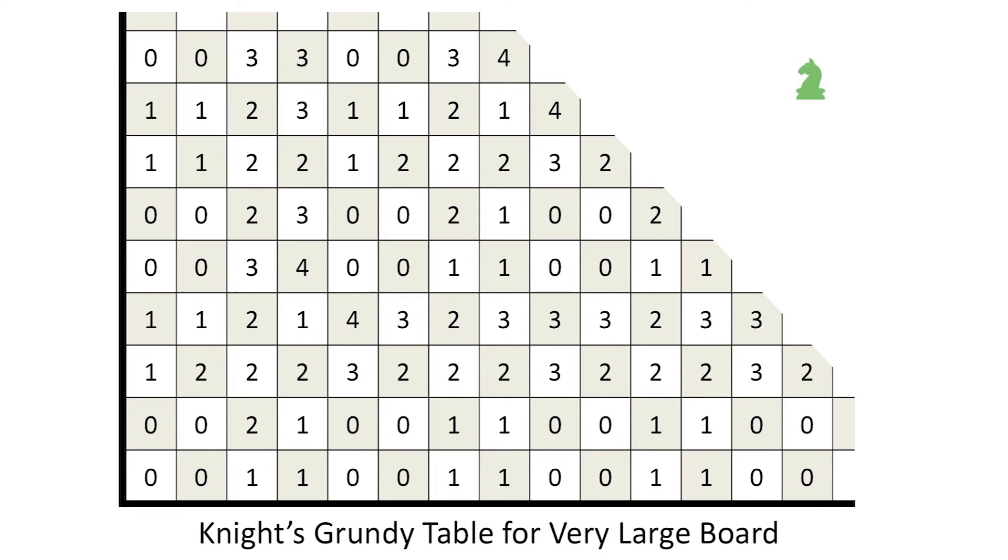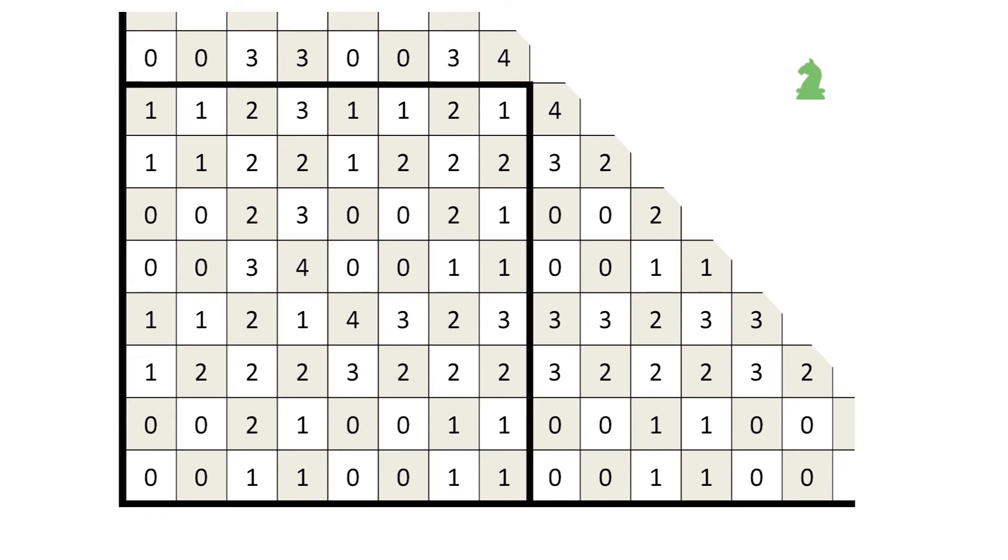Here is the knight's Grundy table for a very large board. Suppose the knight needs to play on a smaller board, such as the 8x8 chess board. Since he can't move off the smaller board, the Grundy numbers on the smaller board might differ from those on the larger board. Here is such a move. Does eliminating that move change the Grundy number? No, because there is another move on the smaller board which is equivalent. Likewise from this 3, there is an equivalent move that stays on the smaller board.